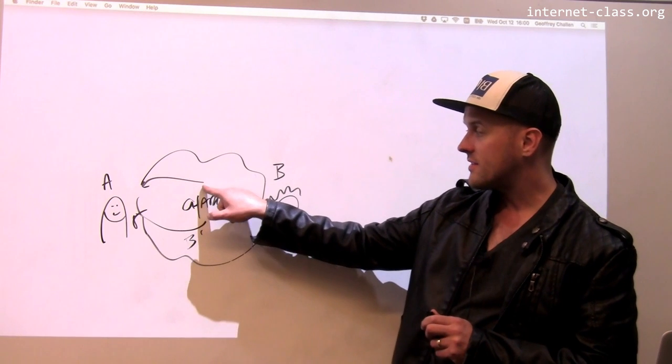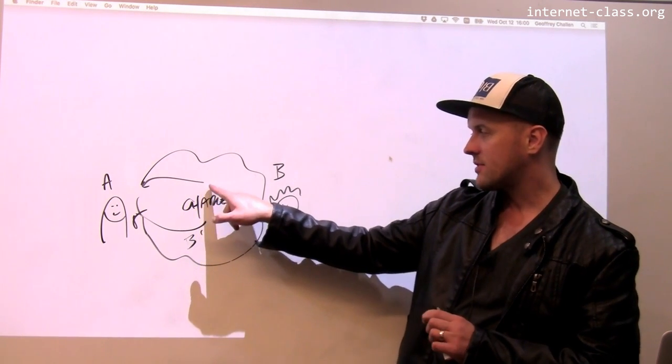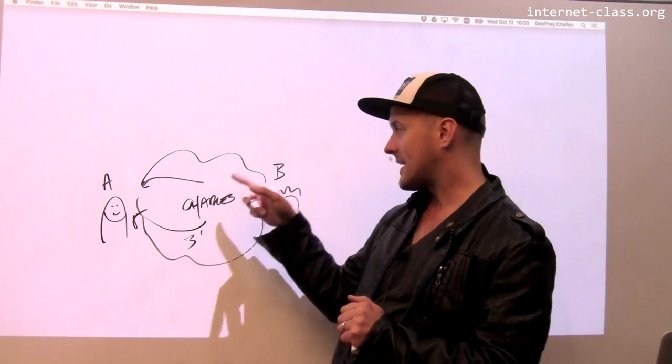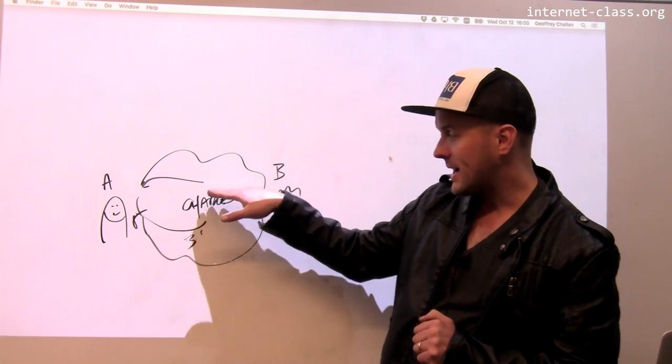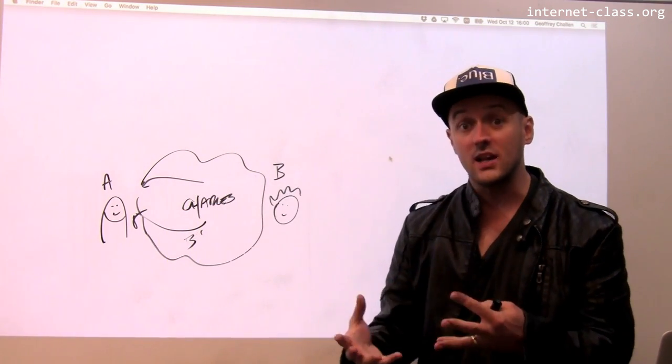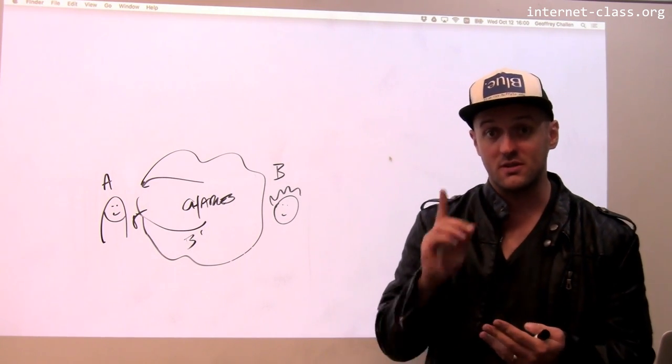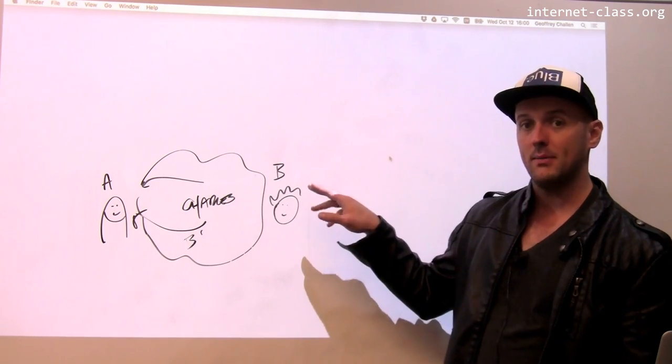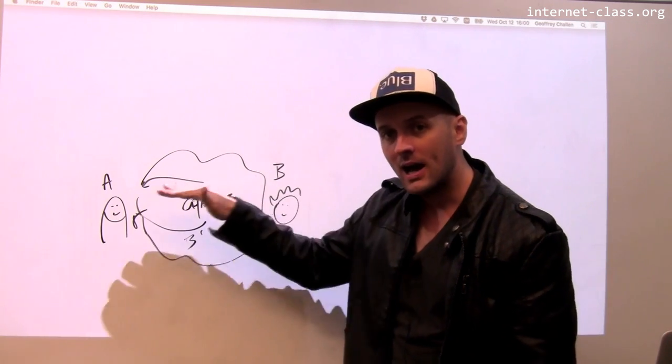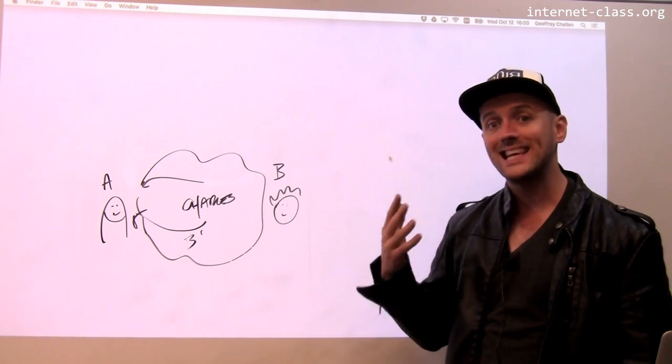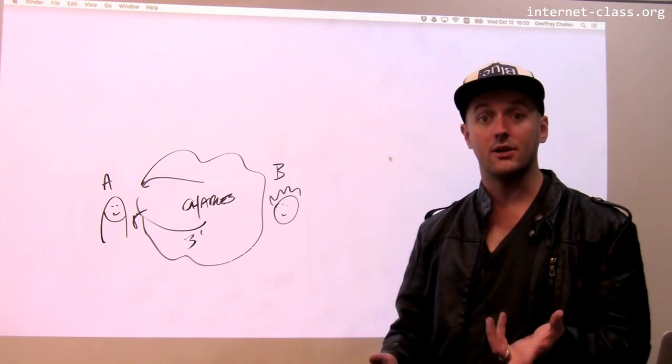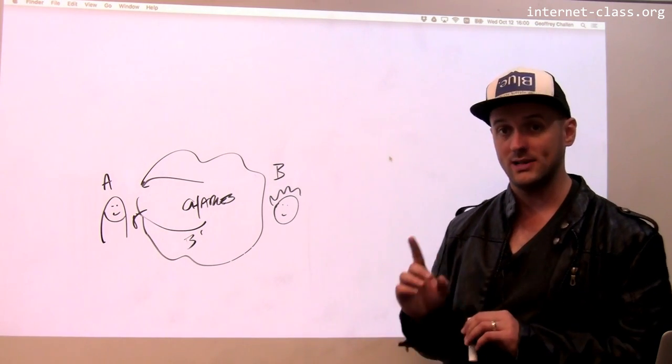Now what makes this worse is that Charles can actually forward those messages onto Bob. So Charles can get Bob's public key, take the message from Alice, decrypt it, store the content. So now I know what they were saying to each other, which is exactly what I didn't want to happen, and still forward the message onto Bob. Charles can sit here on the communication path between these two parties and intercept all of the traffic in clear text, which is exactly what we didn't want to happen.